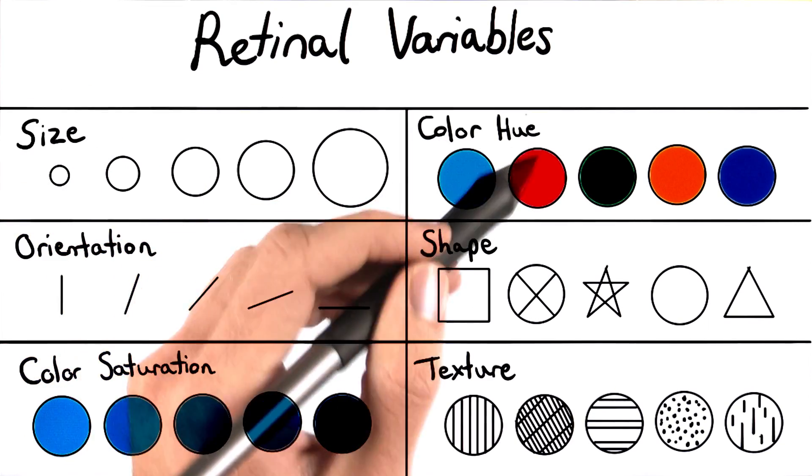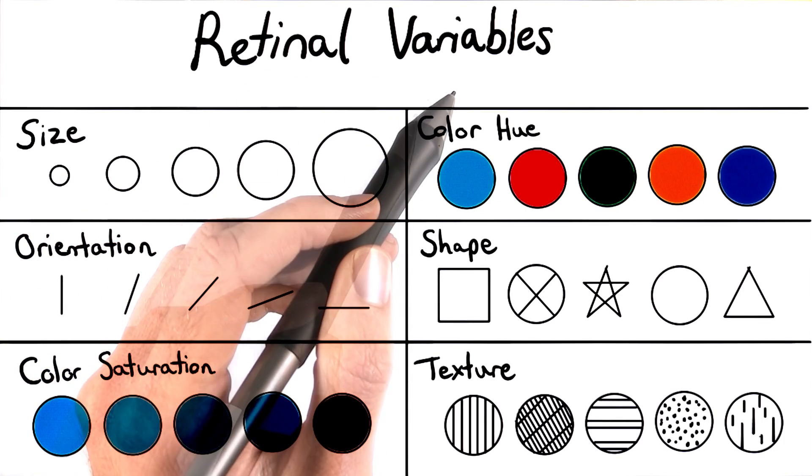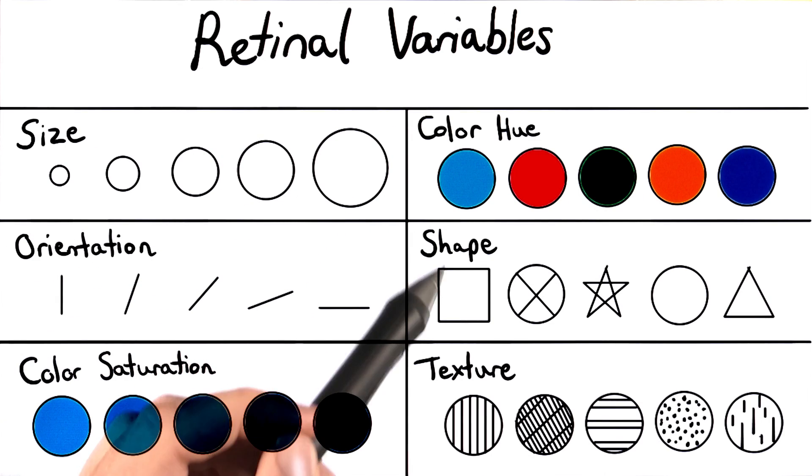Size and color hue, which we just saw in the visualization, are both examples of retinal variables. And if we wanted to, we can even encode additional variables in these other retinal variables.